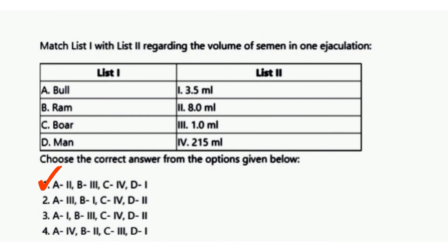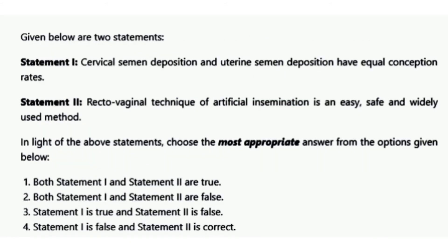The next question gives two statements. Statement 1: cervical semen deposition and uterine semen deposition have equal conception rates. Statement 2: the rectovaginal technique of artificial insemination is an easy, safe, and widely used method. The correct answer is option 1 — both Statement 1 and Statement 2 are true.